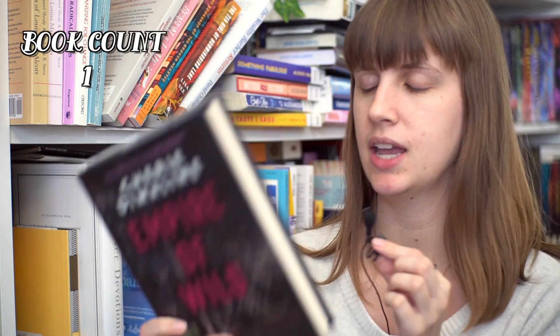Empire of Wild by Sherry Dimaline. This is an adult book but this is by the author of The Marrow Thieves and this one is based on like a Métis traditional story of the Hougarou which is kind of like a werewolf creature and it's like a woman who has lost her husband and then one day like a preacher comes to town and she's like oh my god this is my husband he's like I don't know what you're talking about I'm a priest. So spooky supernatural stuff going on.